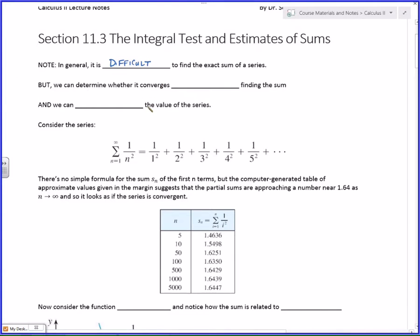But we can determine whether or not it converges without finding the actual sum. Like that last example that we just did, we found the sum, and thus we knew it converged. Most of the time, we'll find out whether or not it converges, and we still won't know what it converges to.